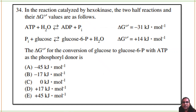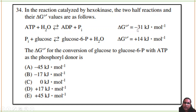Sixth question: in the reaction catalyzed by hexokinase, two half-reactions are given with their delta G values. ATP hydrolysis gives ADP + Pi with delta G = −31 kJ/mol, and glucose + phosphate gives glucose-6-phosphate + water with delta G = +14 kJ/mol. To find delta G for glucose to glucose-6-phosphate with ATP as phosphoryl donor, add the two values: −31 + 14 = −17 kJ/mol.